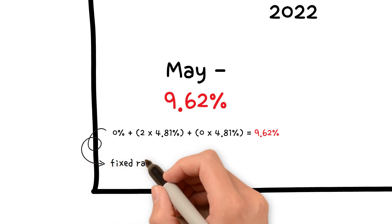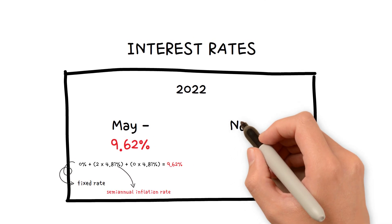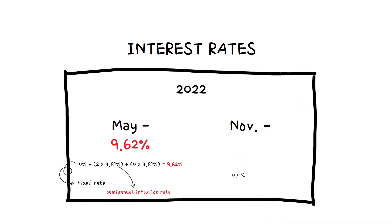The May fixed rate was 0%, and the semi-annual inflation rate was 4.81%. Furthermore, the fixed rate announced in November was 0.4%, and the semi-annual inflation rate was 3.24%. This is expressed as an expression.